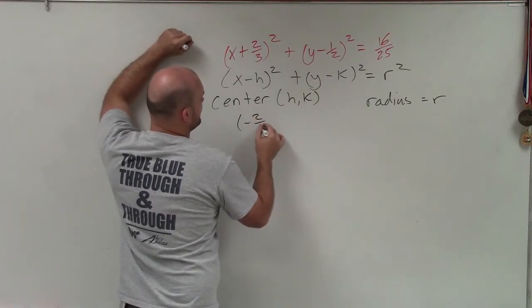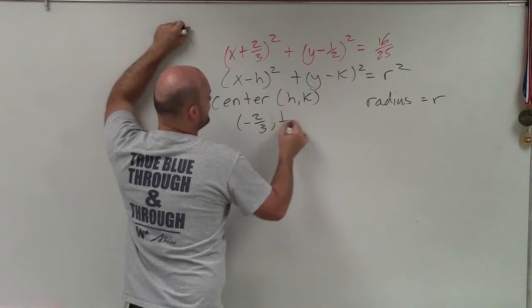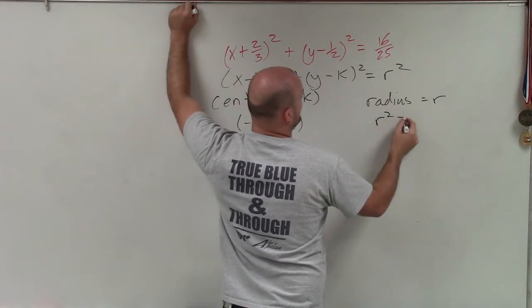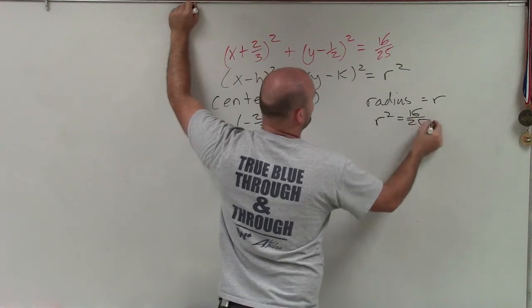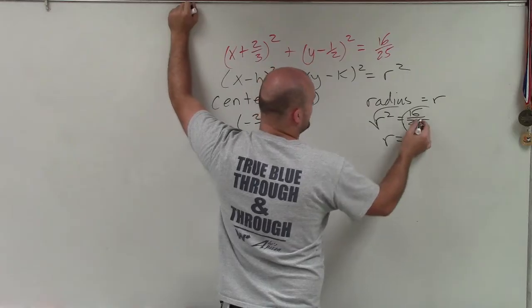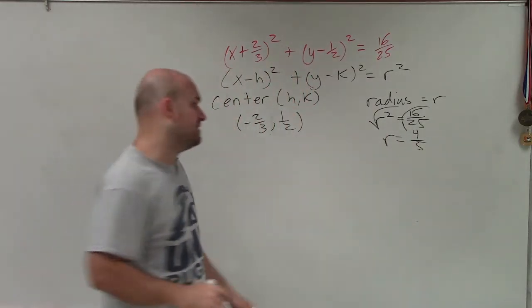Right? So it's negative 2 thirds and positive 1 half, where my radius is r squared. So we could say r squared equals 16 over 25, square root, square root, r equals, square root of 16 is 4, square root of 25 is 5. So now I know the value of r, which is 4 fifths.